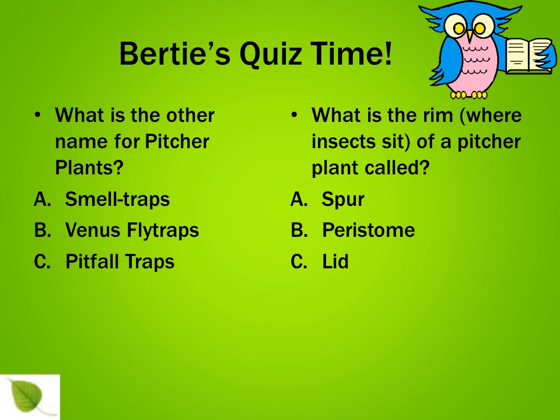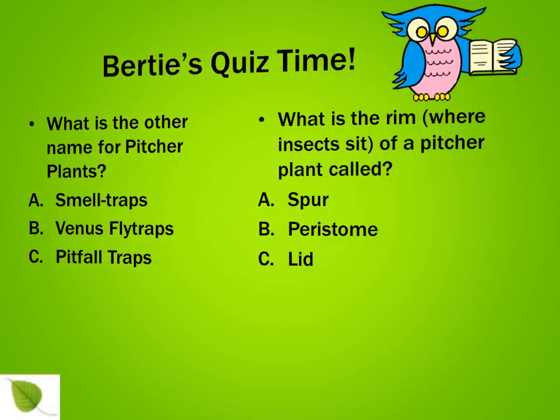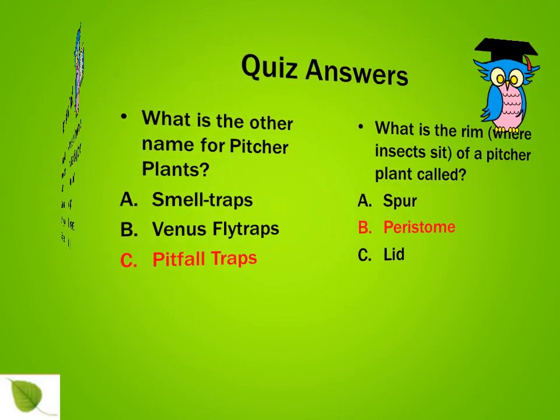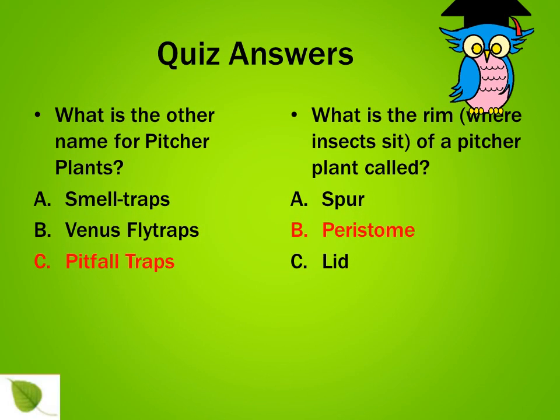Ready with your answers? Great! Let's have a look at the solutions. The other name of pitcher plant is pitfall traps, and peristome is the name of the rim where the insects sit.